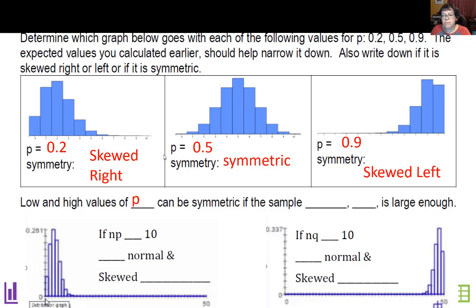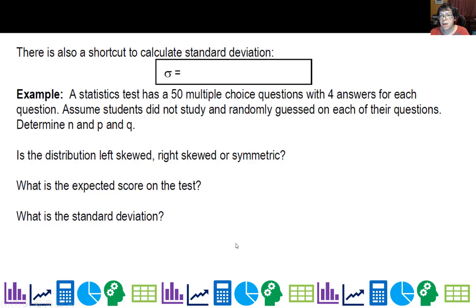Low and high values of p can be symmetric if the sample size n is large enough. If np is greater than 10 and n(1-p) is greater than 10, then we can use a normal model. For binomial distributions, the standard deviation is the square root of n times p times q, where q is 1 minus p.